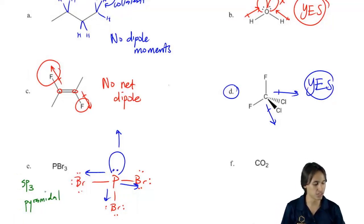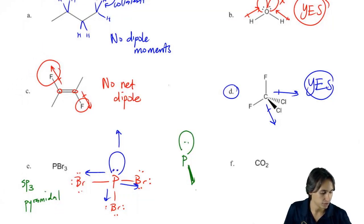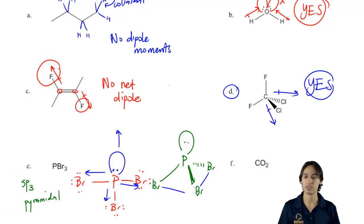So what that means is that what it actually looks like is this: P with a lone pair, with a bromine in the front, a bromine in the back, and a bromine on a stick. Remember that I said pyramidal kind of looks like a pyramid, so that's a pyramid.